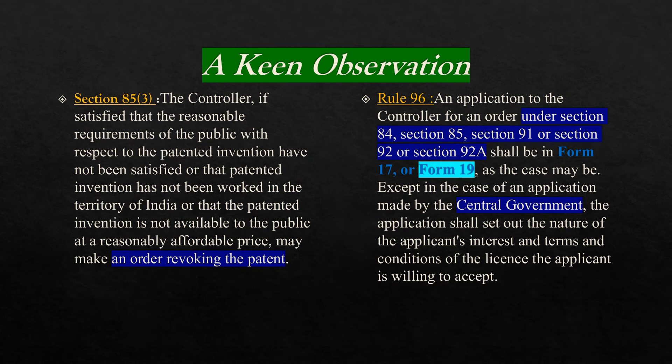Now we will have a keen observation about the relevant section and rule. Please look at section 85, subsection 3. It says: the Controller, if satisfied that the reasonable requirements of the public with respect to the patented invention have not been satisfied, or that the patented invention has not been worked in the territory of India, or that the patented invention is not available to the public at a reasonably affordable price, may make an order revoking the patent.